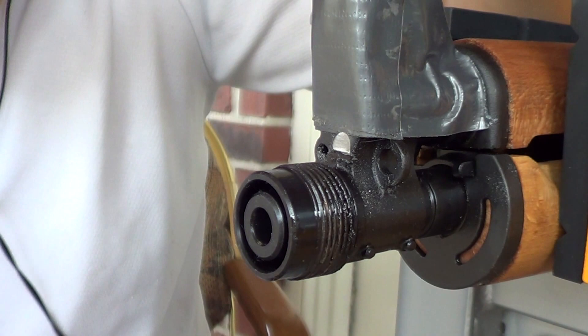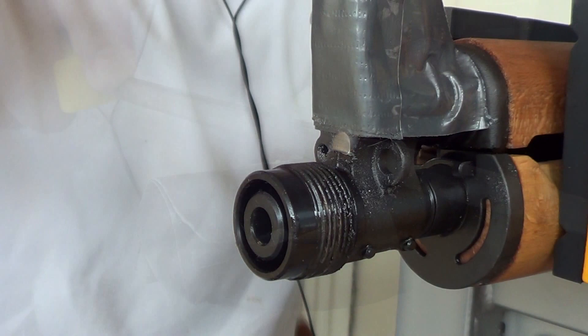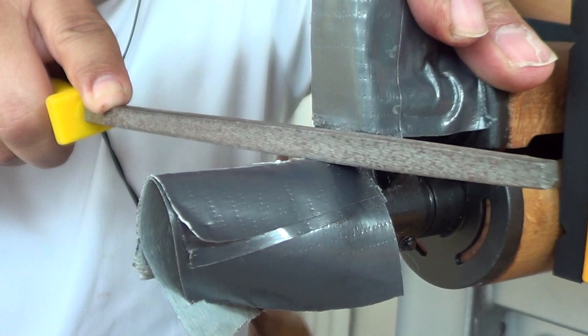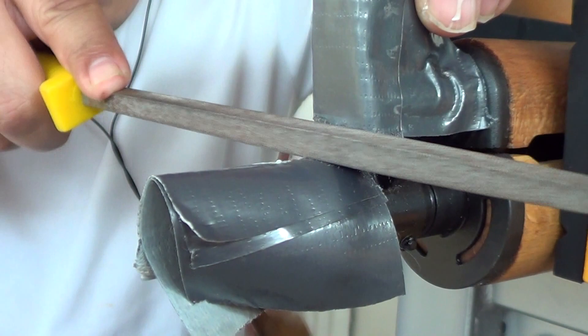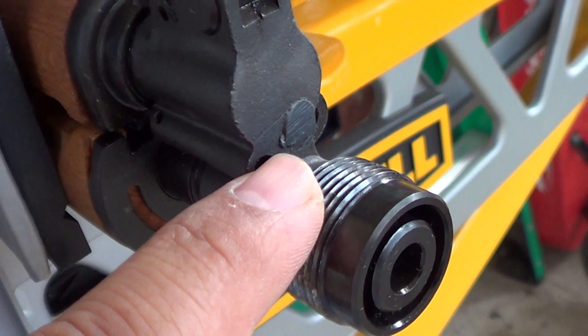Looks like it needs to be filed down a little bit right here - it's real sharp, so I'll take care of that real quick. Alright guys, as you can see I blued right here, the part that I was filing on, to make it look a little bit better. I'm not gonna file any more down on it. Now I'm gonna install the muzzle brake.